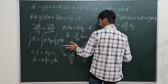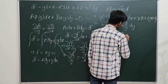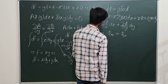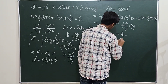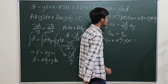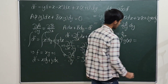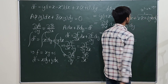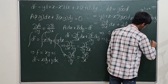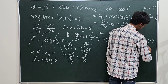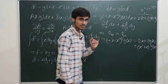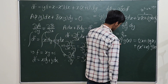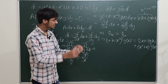Applying the exactness condition to dΦ, you equate corresponding terms. The partial derivative of Φ with respect to x differentiated with y must equal the partial derivative of Φ with respect to y differentiated with x. This gives a relationship involving g(x) and g'(x).